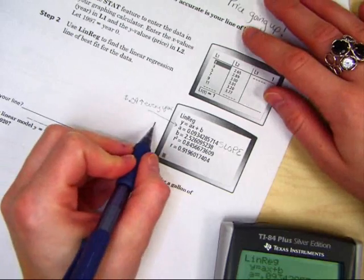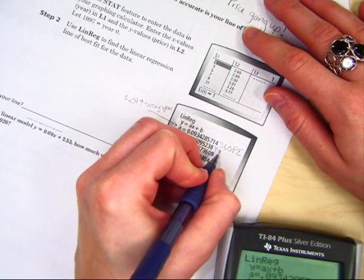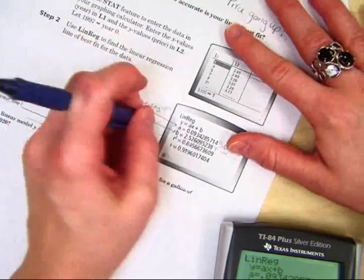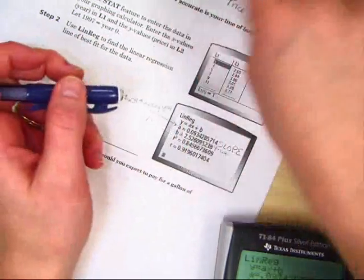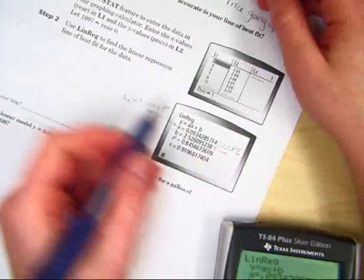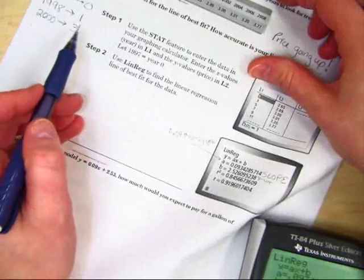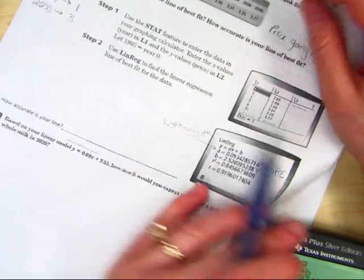The B is your Y intercept. It doesn't really relate to our problem at all. It just helps us make the equation perfect. Actually, if you really want to know, B is what the predicted value would be in year zero of 1997.